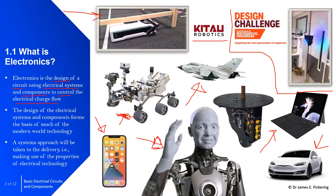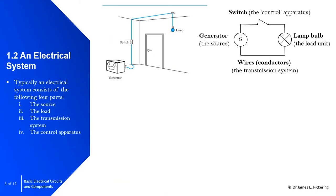Within this series of videos I will be taking a systems approach to the delivery, making use of the properties of the electrical technology. An electrical system is typically made up of four parts: the source, the load, the transmission system, and the control.